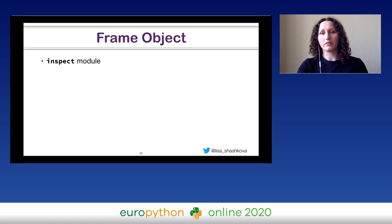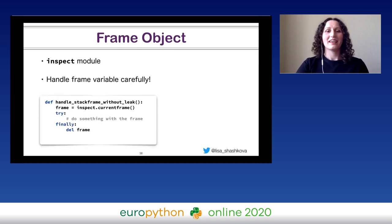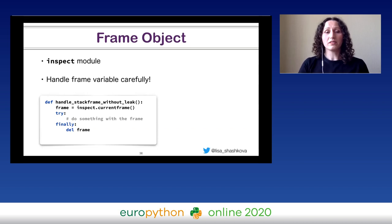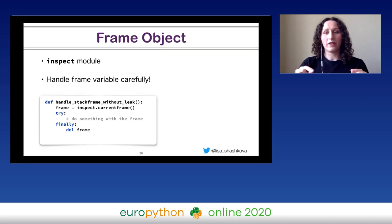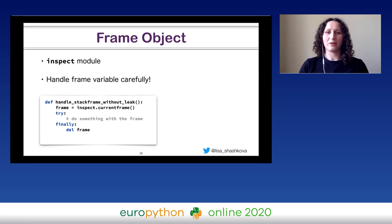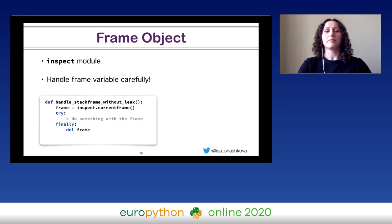The most important thing to remember if you decide to work with frame objects is that you should explicitly delete a frame variable when leaving the scope. If you don't do it, there will be a link from the local variables dictionary to your frame object, and the local variable is a link back to the frame object. So there will be a cycle of references, which is bad for memory management. As you know, Python uses reference counting for memory management, and this cycle will only be removed by the garbage collector, which will happen much later. So it's better to delete this local variable explicitly.